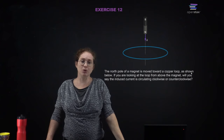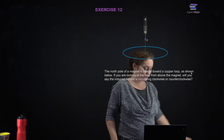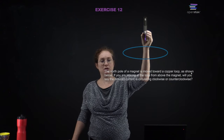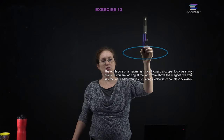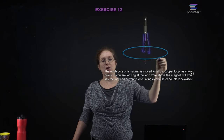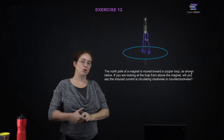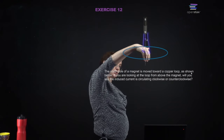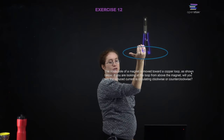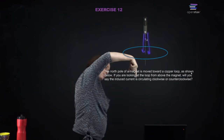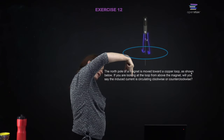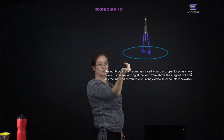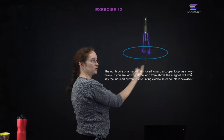The north pole of a magnet is moved towards a copper loop. The field lines emanate from the north pole and wrap around to connect to the south pole. I am forcing a magnetic flux downward through this loop, so I am going to induce a current which produces a magnetic flux upward inside of the loop to resist the change.